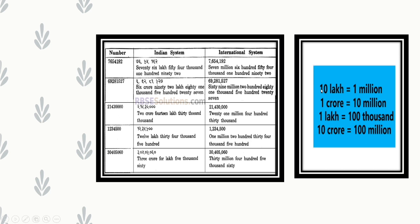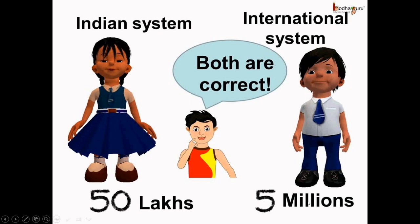Comparison between Indian and international systems: 10 lakhs (Indian) = 1 million (international). 1 crore (Indian) = 10 million (international). 1 lakh (Indian) = 100,000 (international). 10 crore (Indian) = 100 million (international). For example, 50 lakhs in Indian system equals 5 million in international system — both are correct, just different terminology.